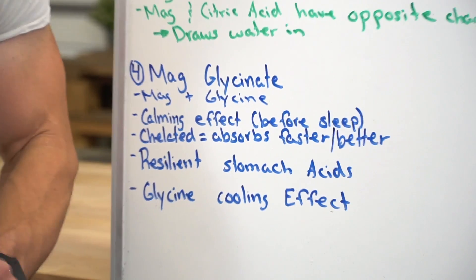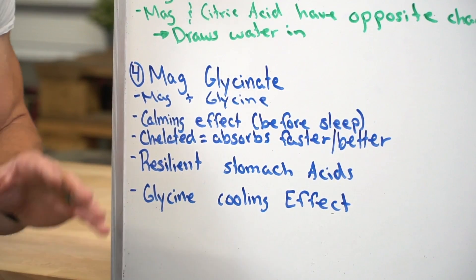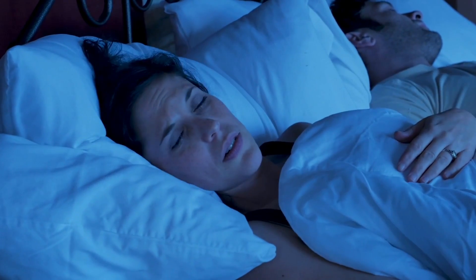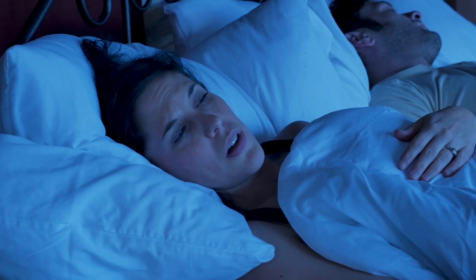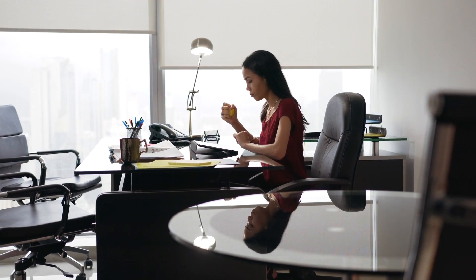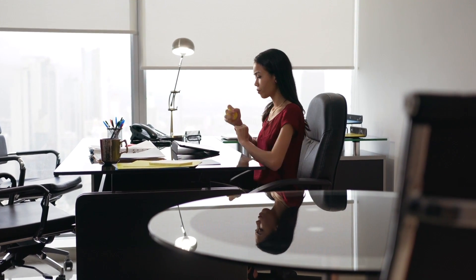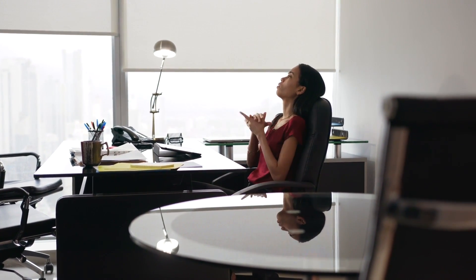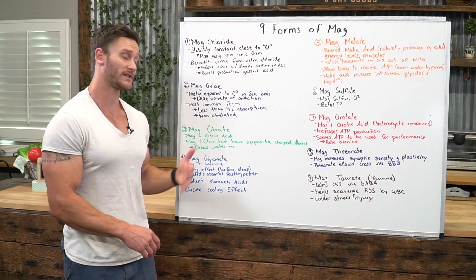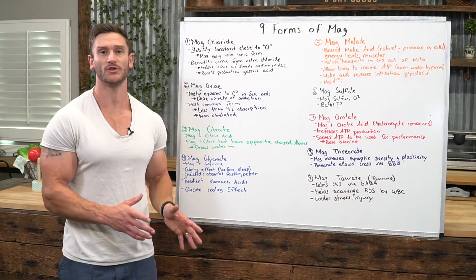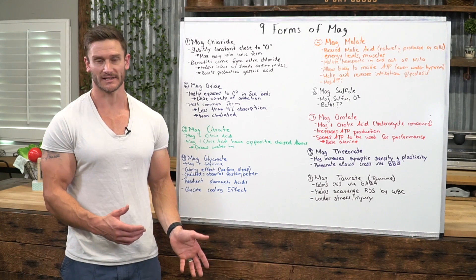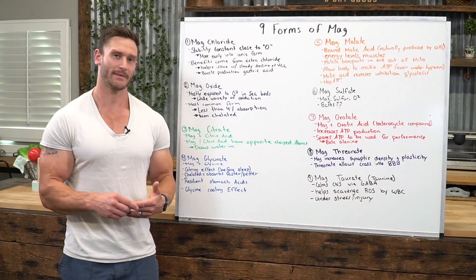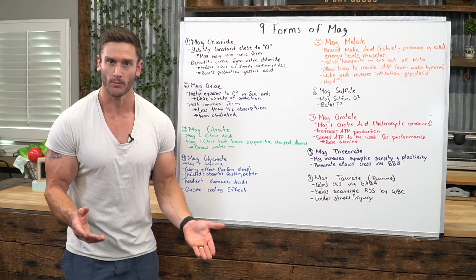Magnesium glycinate is one of my favorites. This is what you want to use if maybe you're a little bit jittery, having a hard time falling asleep, or you're just a little bit more wound up. Maybe you're someone suffering from stress at this point in time. It has a very powerful calming effect, which is why it's perfect before sleep. This is what I would usually use if I'm having a hard time falling asleep — I use it if I feel a little bit wound up, maybe my day was just a little bit more chaotic.